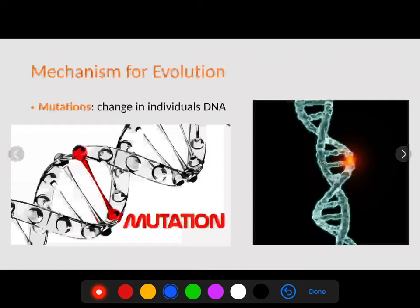Mutations are the things that change our DNA the most when talking about evolution. A mutation is just a change in an individual's DNA. It could be a nucleotide change due to an insertion, a substitution, or a deletion — something as simple as that — or it could be something that affects the entire chromosome.